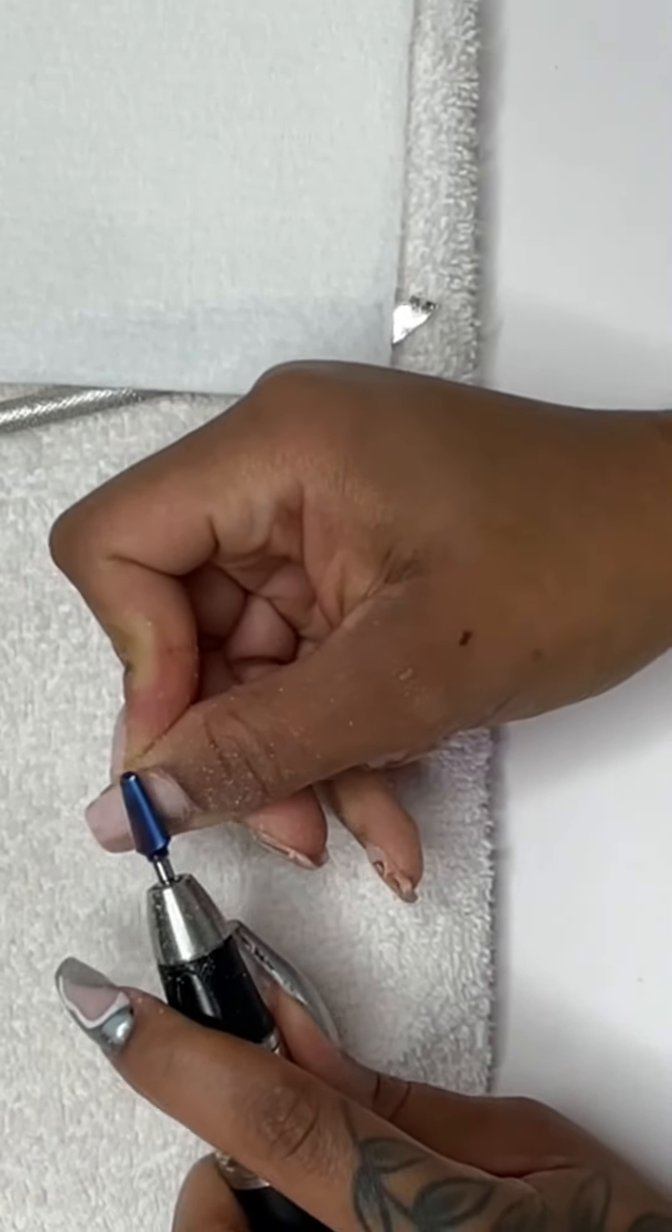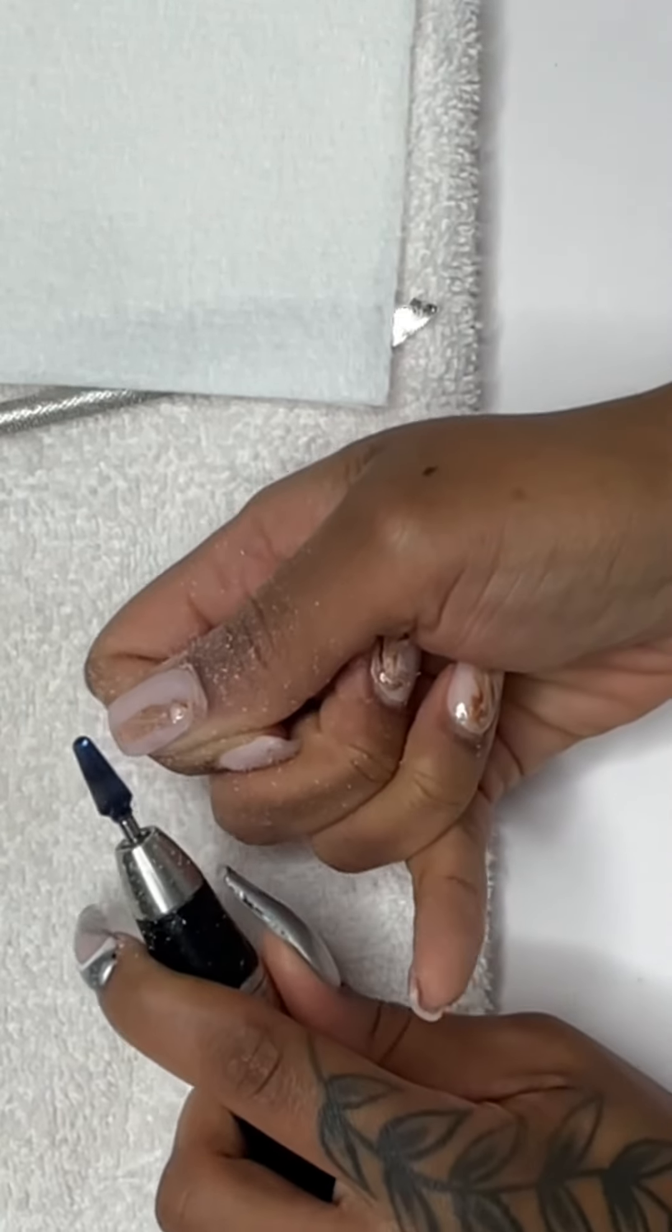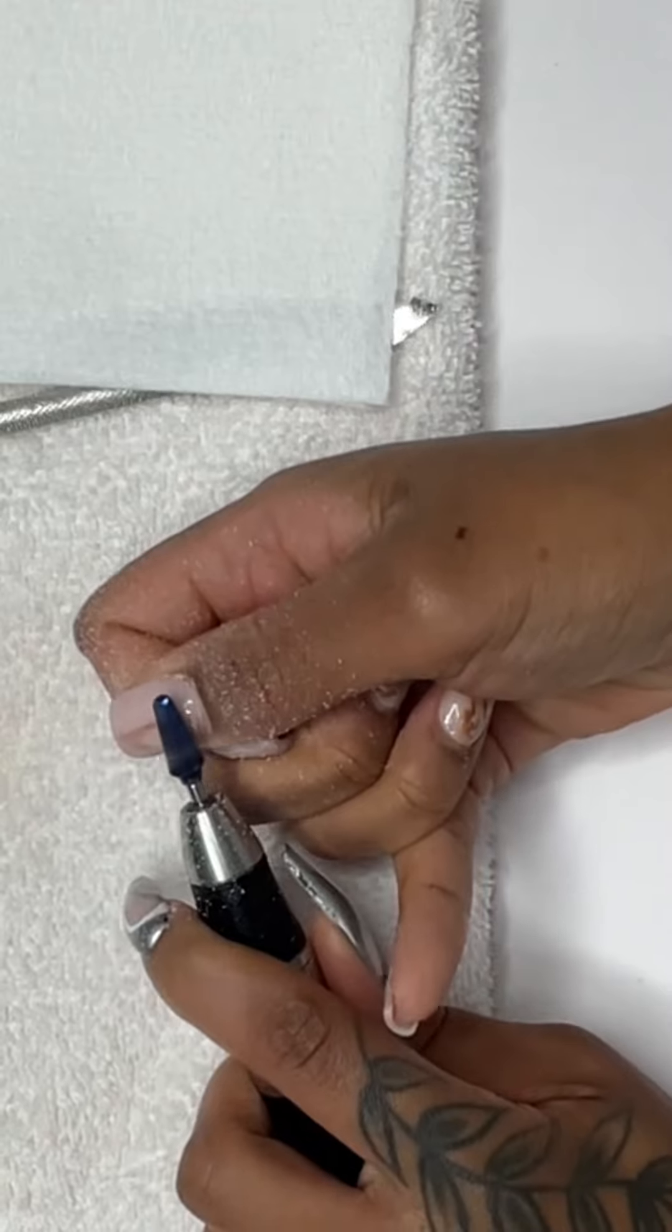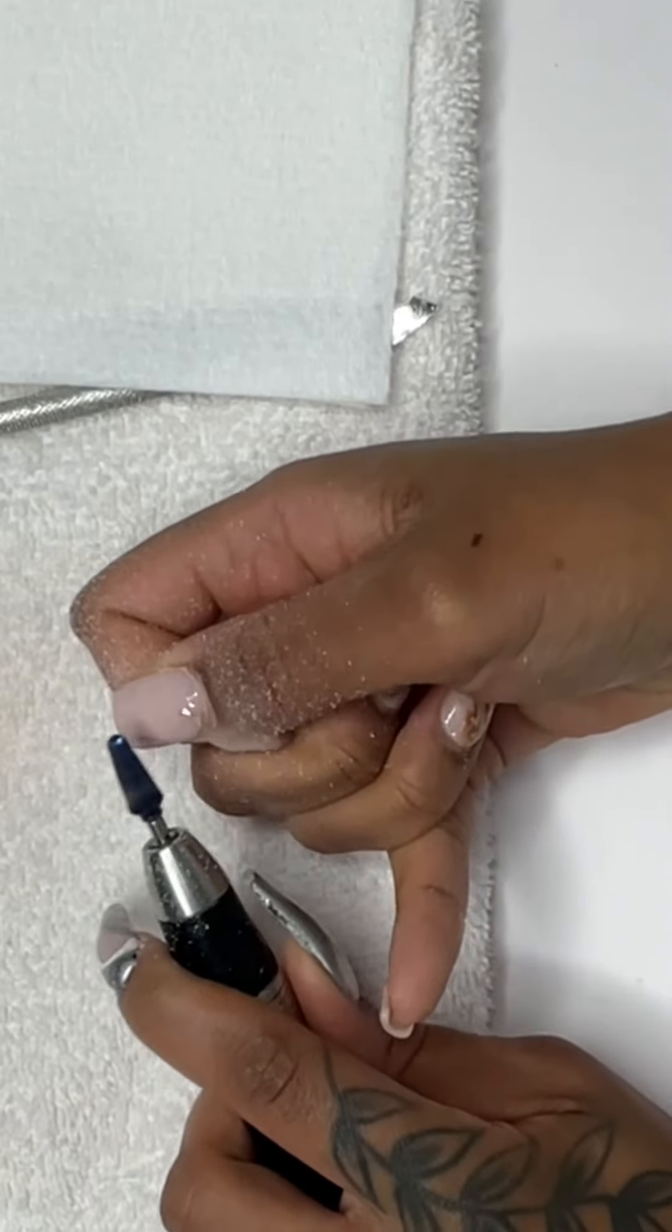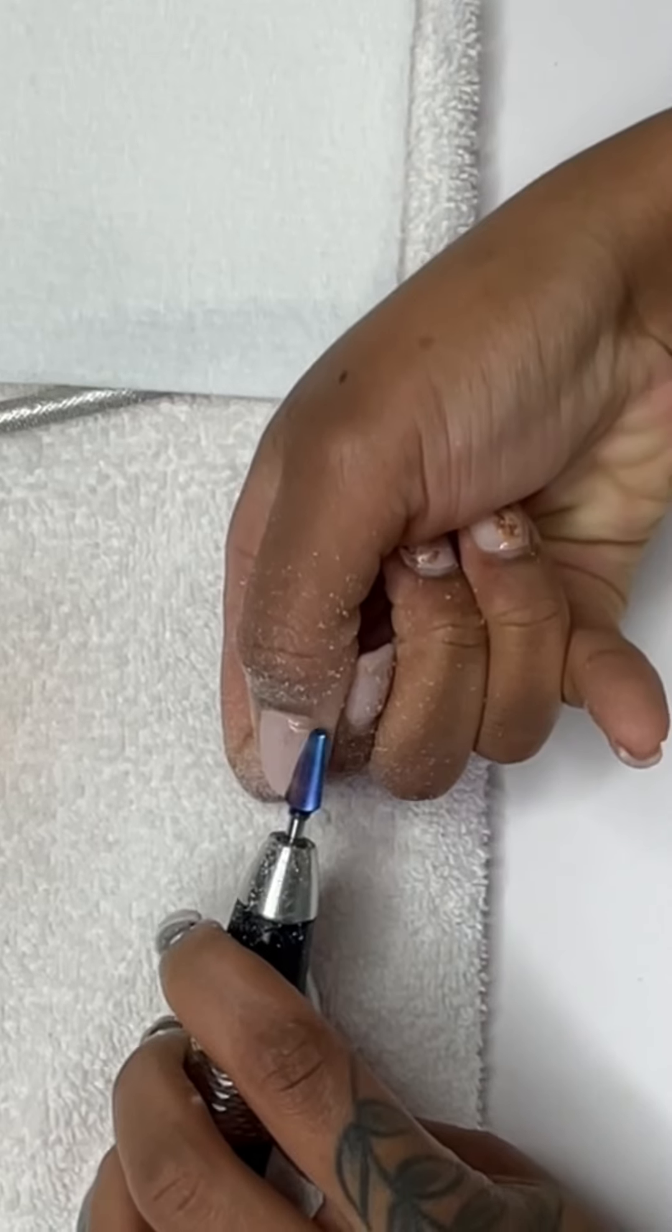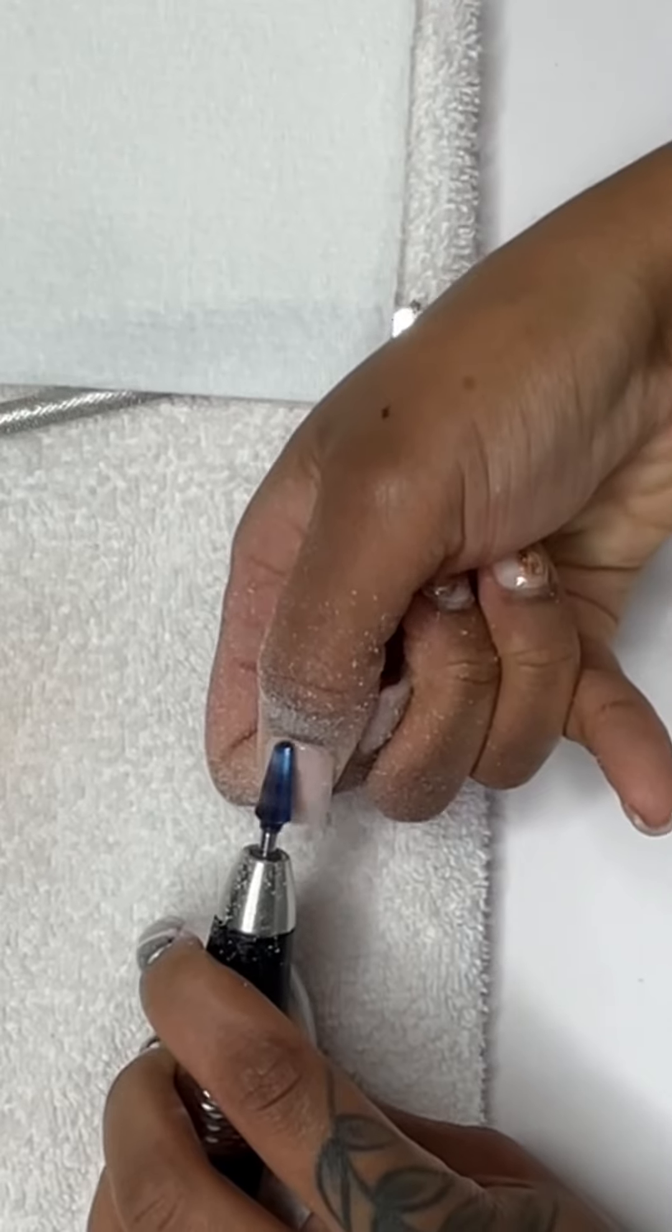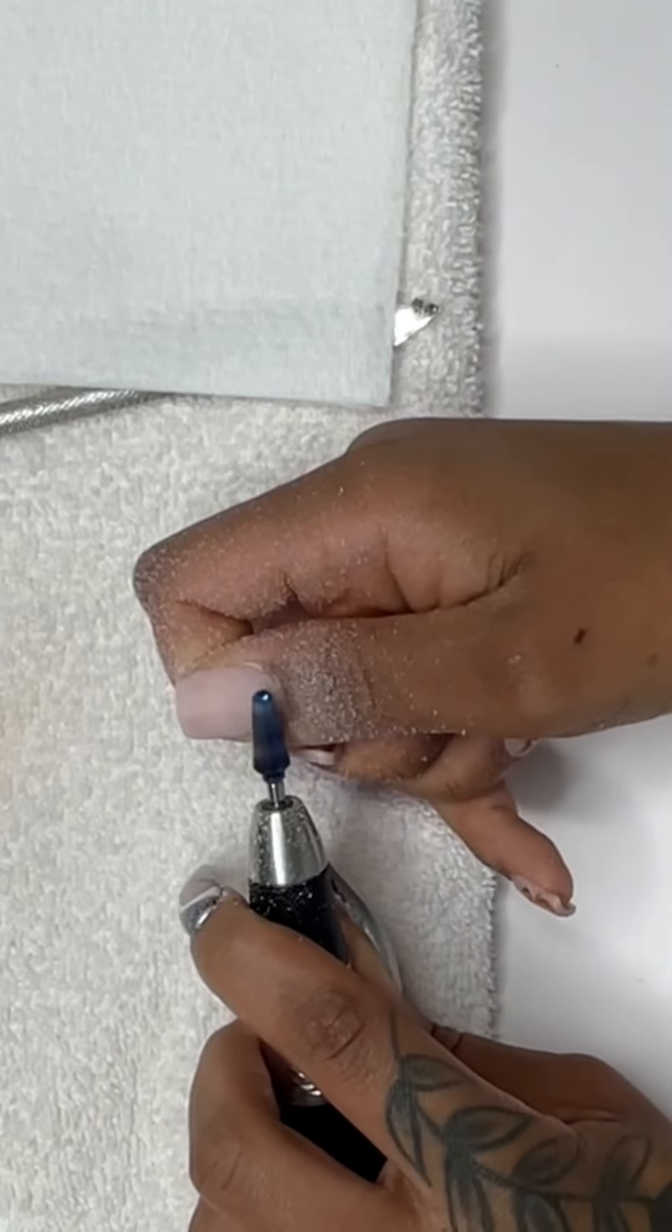As you can see, I'm going to be using more of the body of the bit to be shaving down these nails, getting off that gel polish and bringing the nails down to paper thin. You do want to make sure that you are taking the head of that bit and just going around that cuticle area so that you can start to blend that out as well.